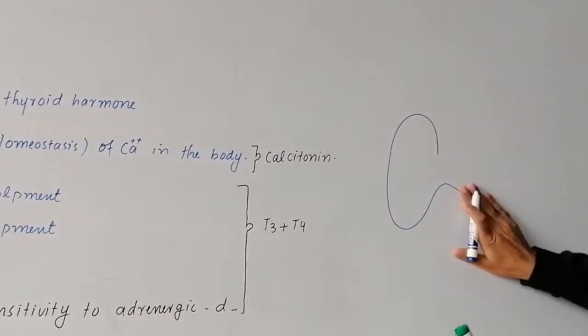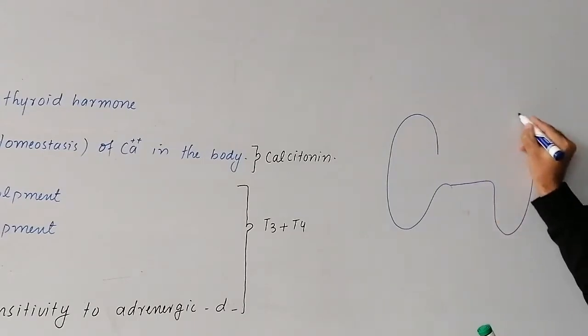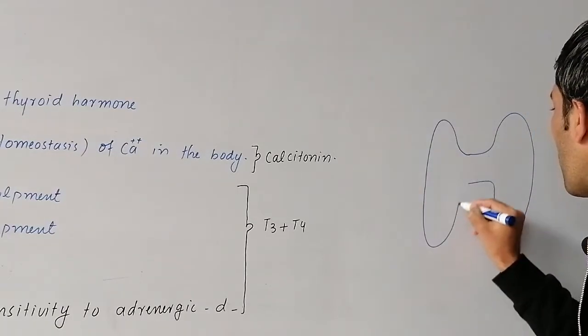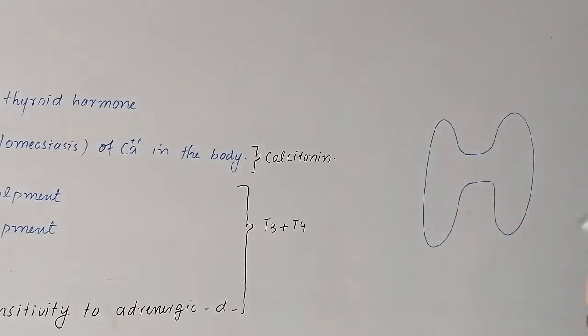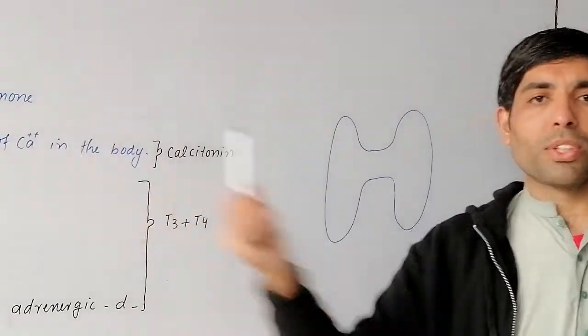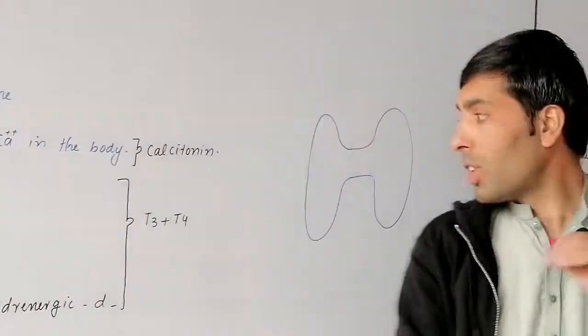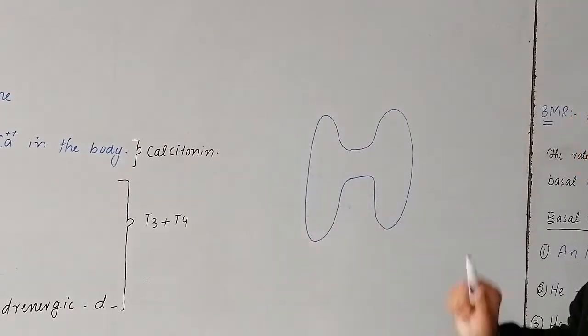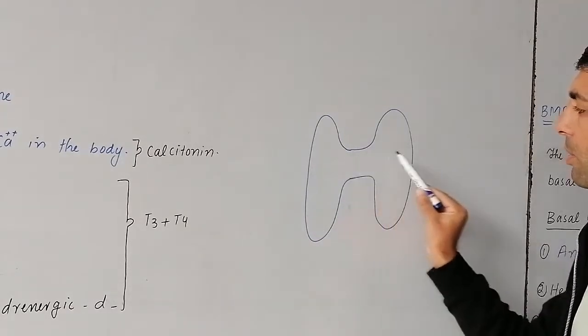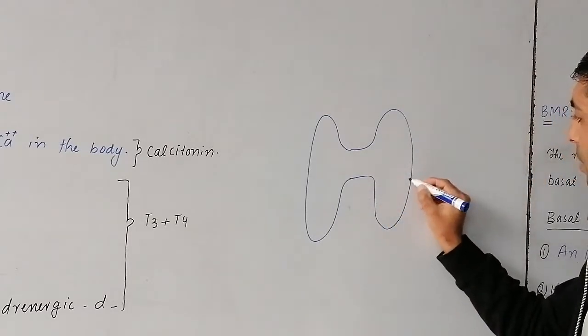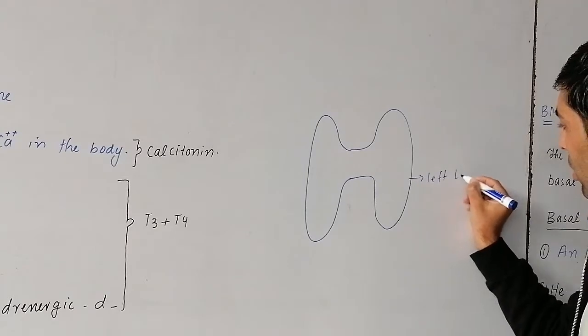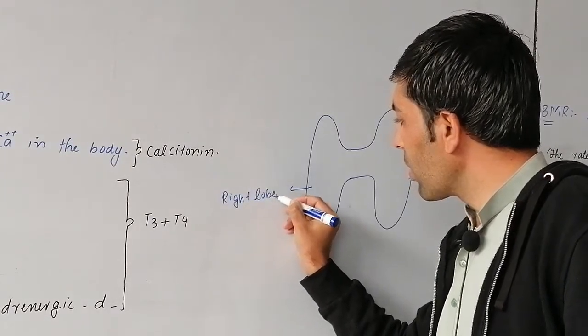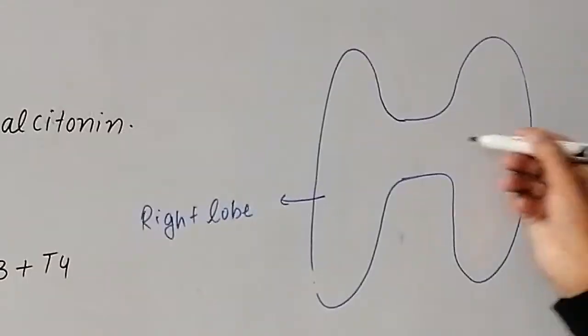Let us suppose this is the thyroid gland. It has two lobes - the right side and left side. The thyroid gland has two lobes: upper part and lower part. So here are two lobes, that is left lobe and that is right lobe.